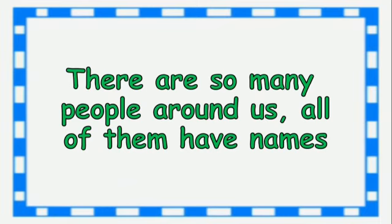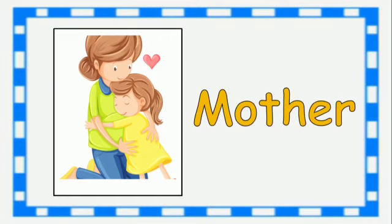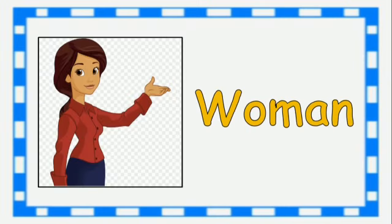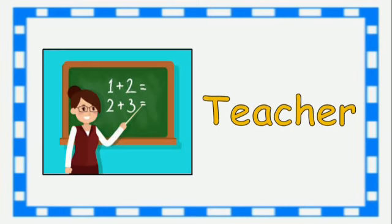There are so many people around us. All of them have names. Examples of people nouns: Boy. Mother. Woman. Farmer. Teacher.